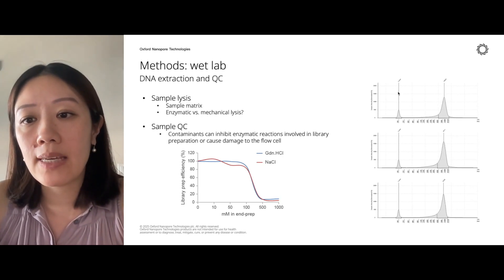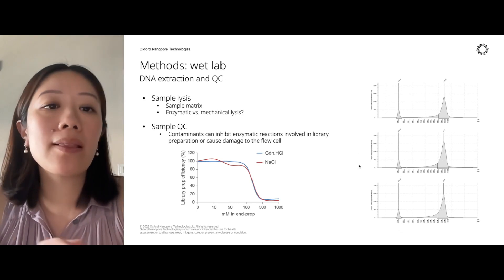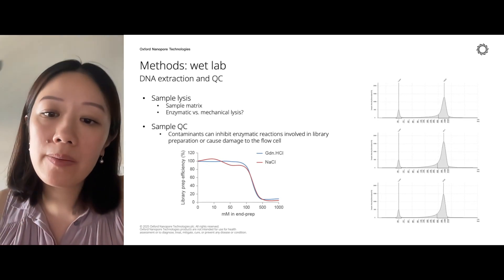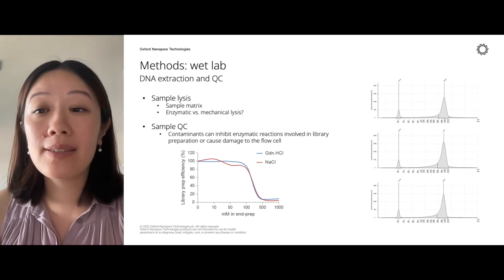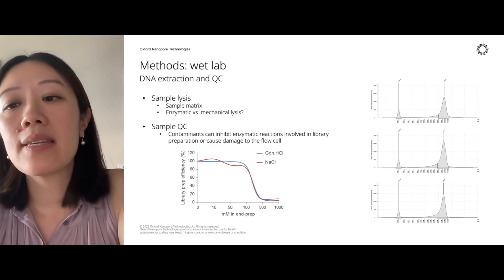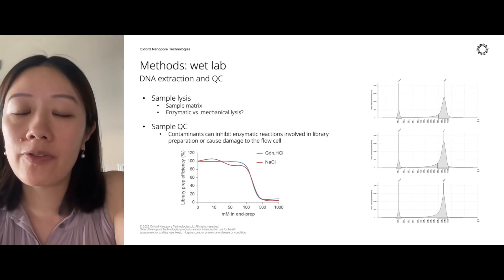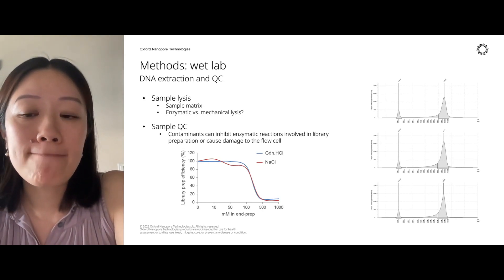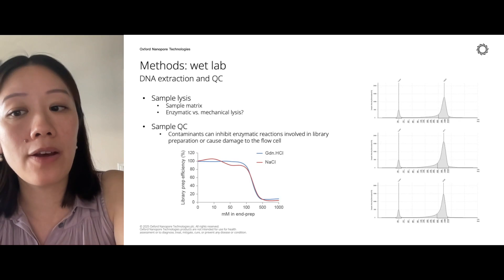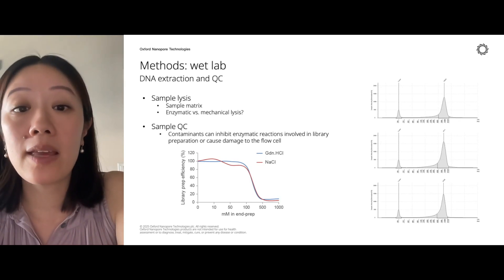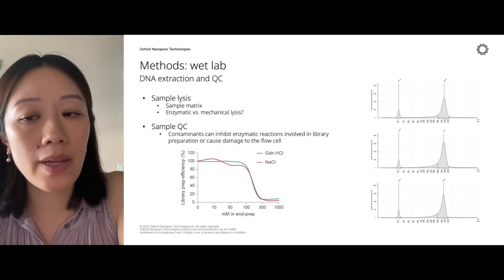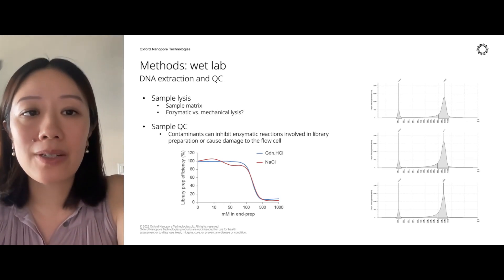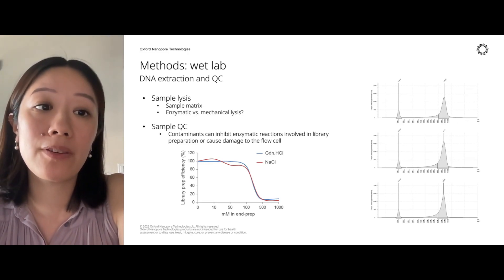On the right you can see some hard numbers. These fragment length distributions are all for the fecal sample. The top, middle, and bottom length distributions correspond to three, six, and nine minutes of bead beating. You can see that the N50 changes from 10 KB to 9.4 KB to 8.8 KB. We found for the compost that a 10 KB N50 gives quite good results for assembly and binning. It doesn't have to be ultra-long reads — 10 KB N50 will give you pretty good results.